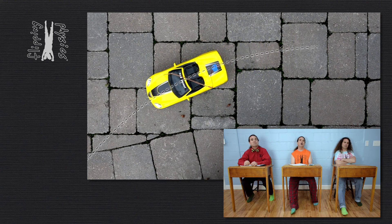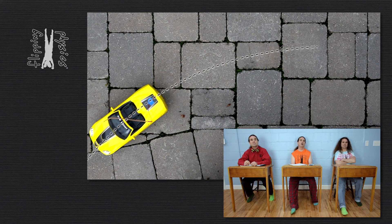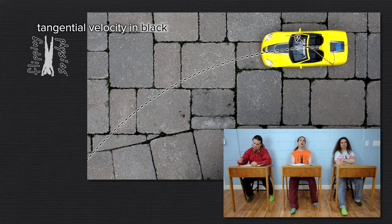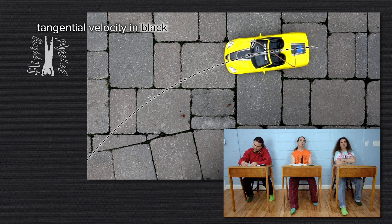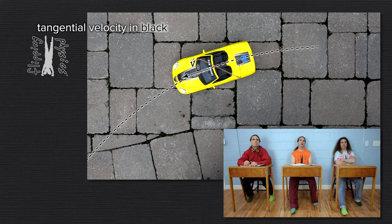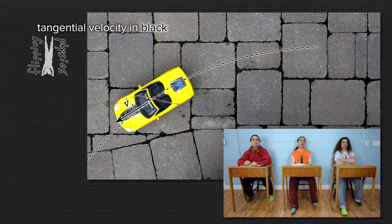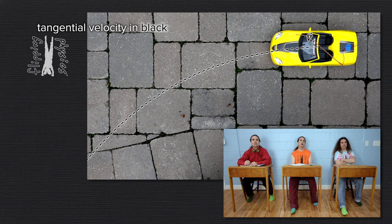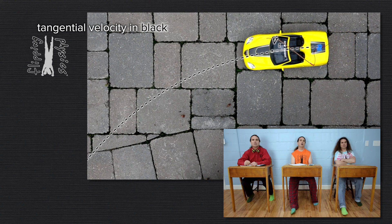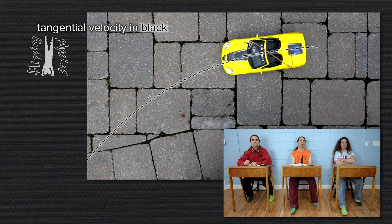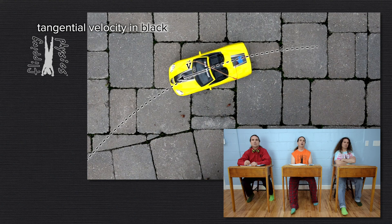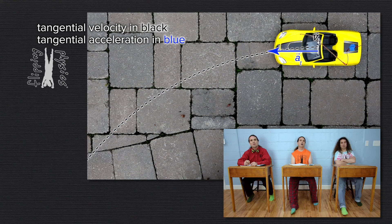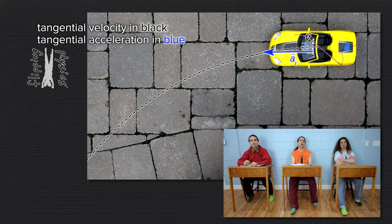Well, initially the car is at rest, so the initial tangential velocity of the car is zero. And as the car speeds up, the magnitude of the tangential velocity of the car increases. So, because the magnitude of the tangential velocity is increasing, the car must be experiencing a tangential acceleration which is in the same direction as the tangential velocity.